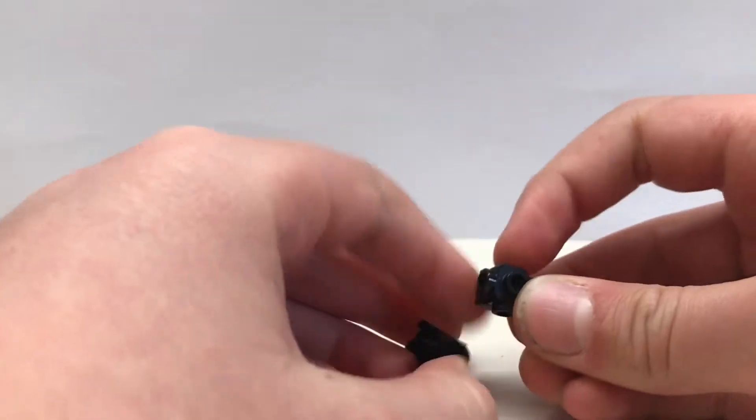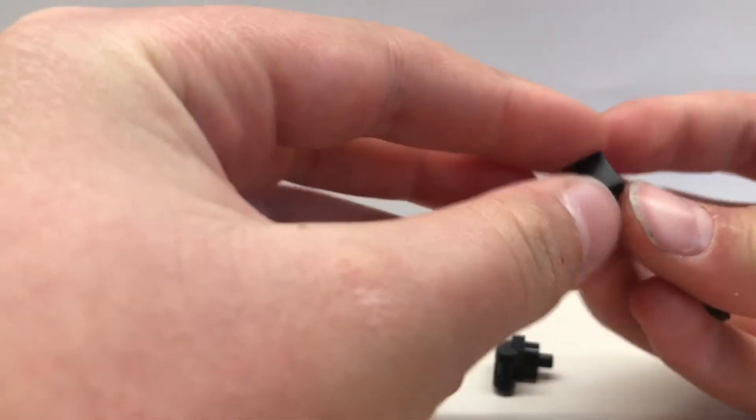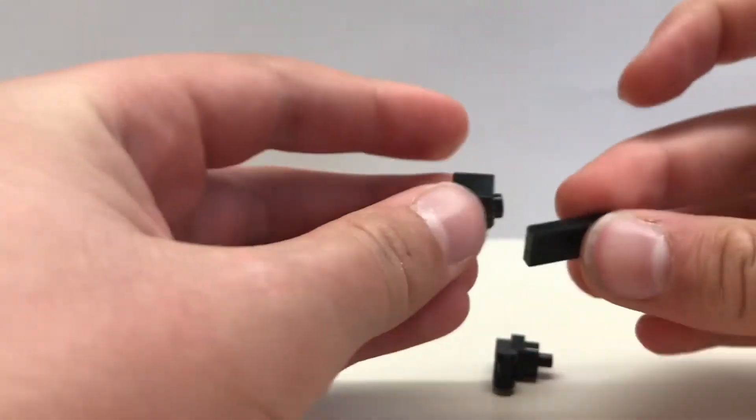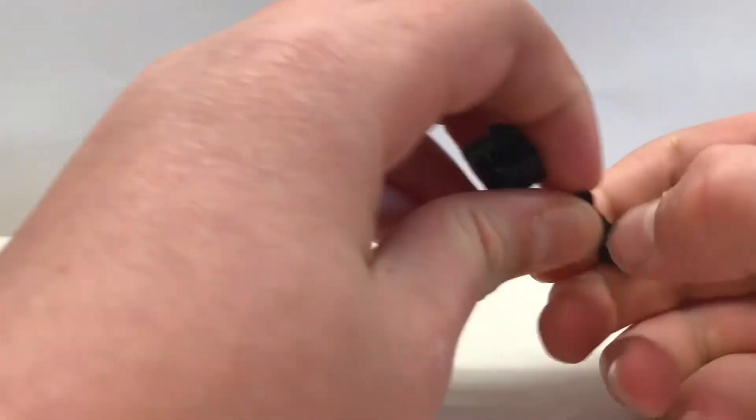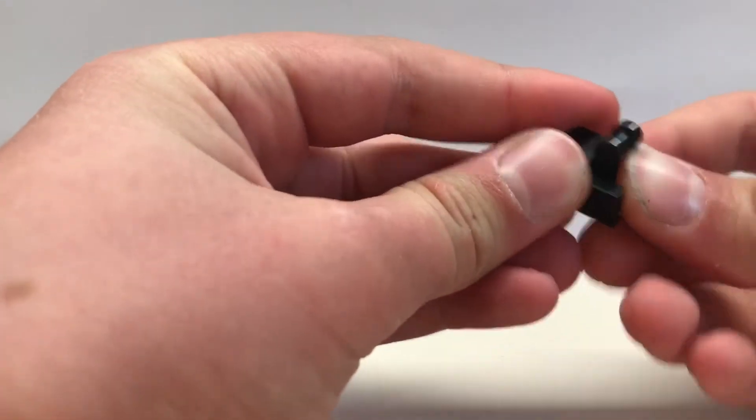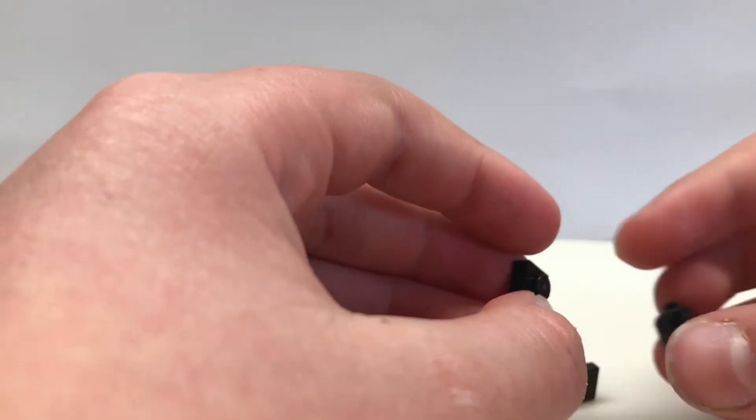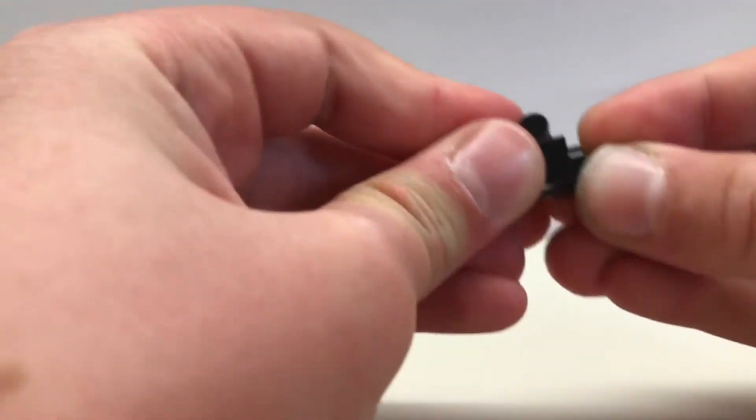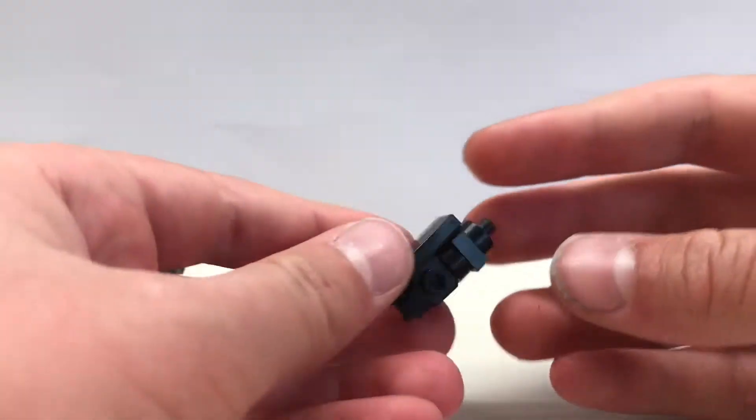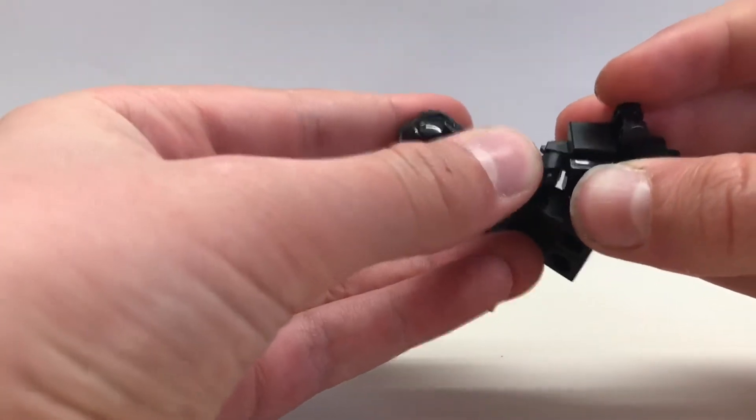His gun's made using this piece from Overwatch, a black 1x1 tile, a black 1x2 tile, a 1x1 stud with bar on the end, a black 1x1 square stud, and then a black 1x1 stud with a bar coming out of it. And then you assemble it like so and then he's got his commander gun.